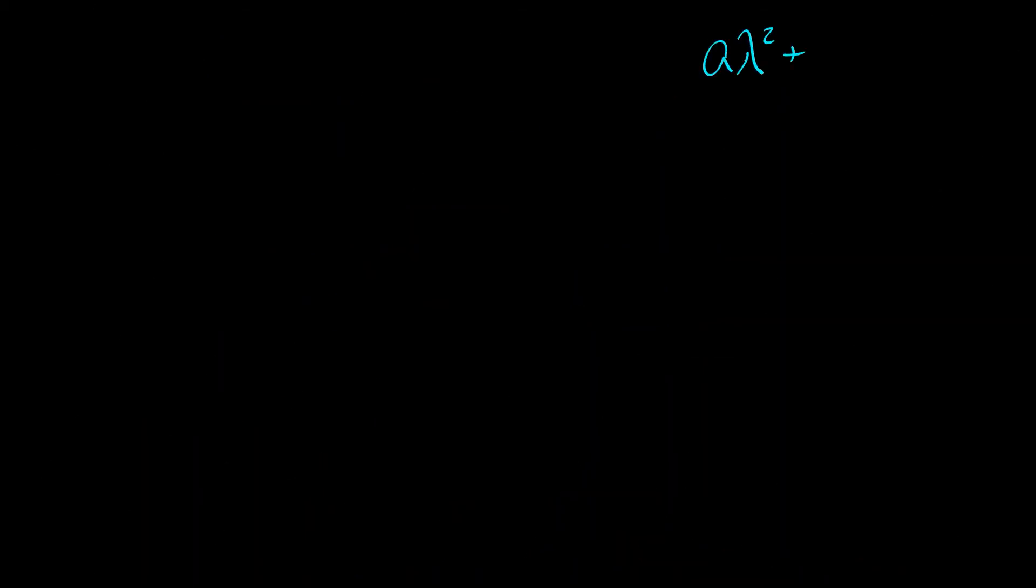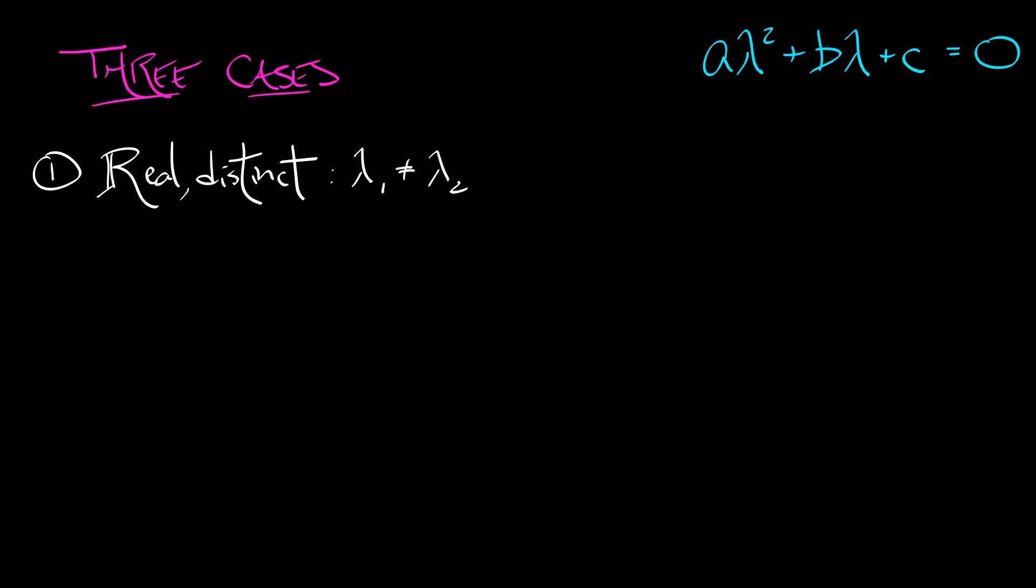Just as before there are going to be three different cases for these basis solutions depending on the roots of this characteristic polynomial aλ² plus bλ plus c equals 0. Let's call those roots λ1 and λ2. The first, the simplest, the best case is when you have real distinct roots λ1 and λ2 different from each other. Then the basis solutions are φ1 = λ1^n and φ2 = λ2^n.